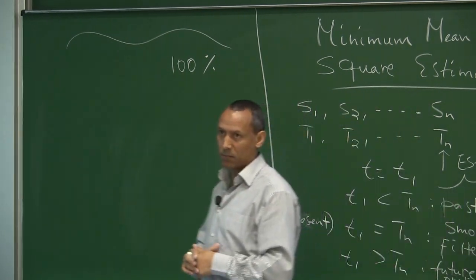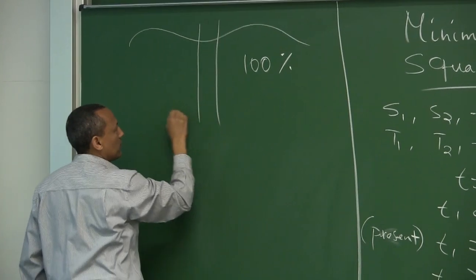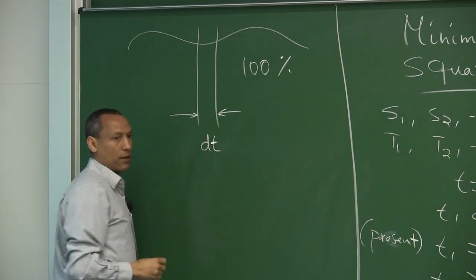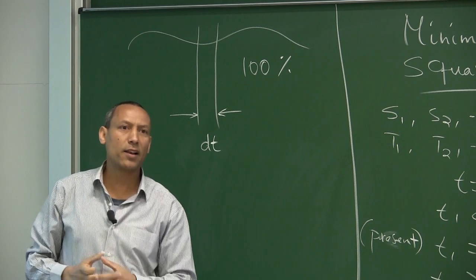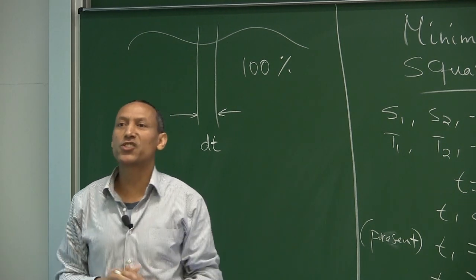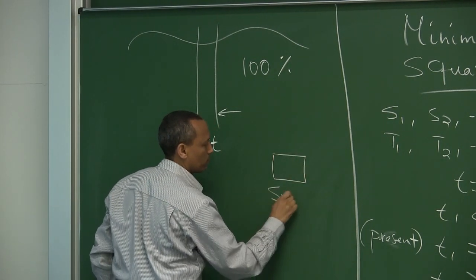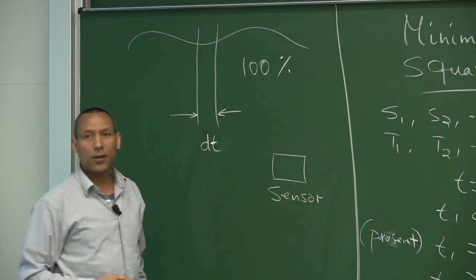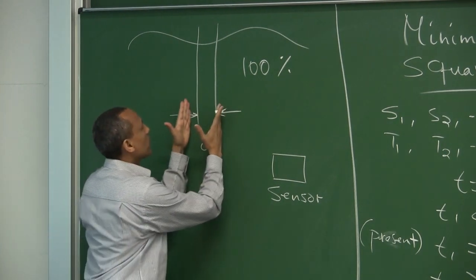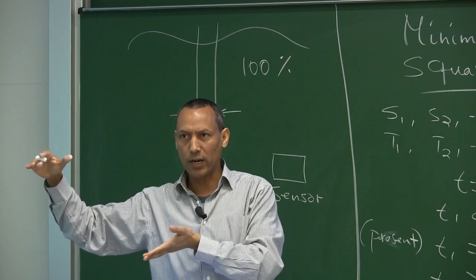The minimum mean square estimation tries to minimize, in a statistical sense, the mean of the error. Suppose for now we are in this brief window — let's just call it dt. In a very infinitesimally small window of time, we measure the temperature using a highly sensitive temperature sensor. And let's assume that within this period of time, the temperature does not change appreciably.